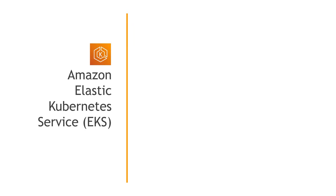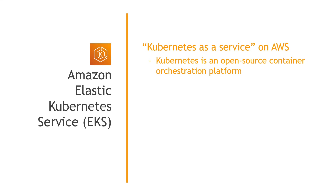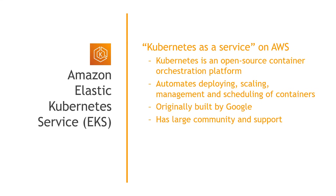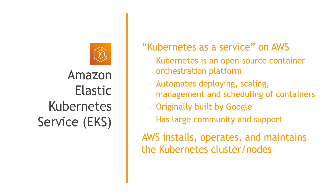Then we have the Elastic Kubernetes Service or EKS — this is Kubernetes as a service on AWS. If you don't know, Kubernetes is an open source container orchestration platform, which basically means it handles the deploying, scaling, management, and scheduling of containers that you need to run your app. It was originally built by Google and has a really large community and support. So EKS is basically Amazon saying: if you already like Kubernetes for what you're doing, then you can use it on AWS now. AWS handles all the Kubernetes architecture parts of clusters and nodes. It's not built by AWS, but it is very popular for working with containers and they support it now.